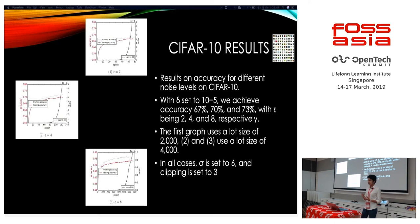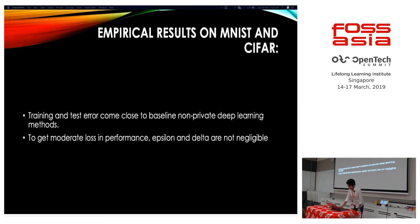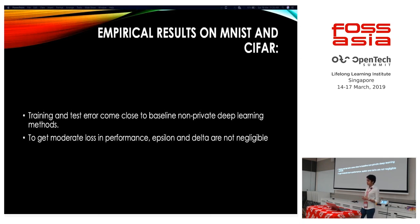The CIFAR-10 database has 60,000 32x32 color images in 10 classes. The training and test error came close to the baseline of non-private deep learning methods. To get moderate loss in performance, epsilon and delta are not negligible — if you increase your epsilon too much trying to be private, that is when you will run into trouble.